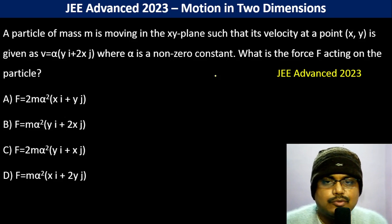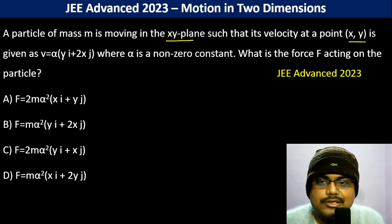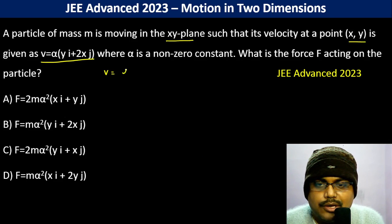A particle of mass m is moving in the xy plane such that its velocity at a point (x,y) is given as v equals alpha y i cap plus 2x j cap.